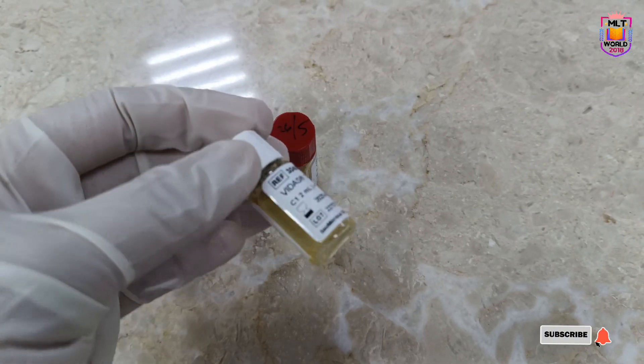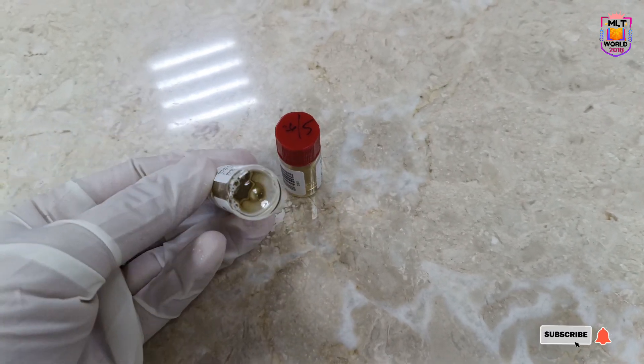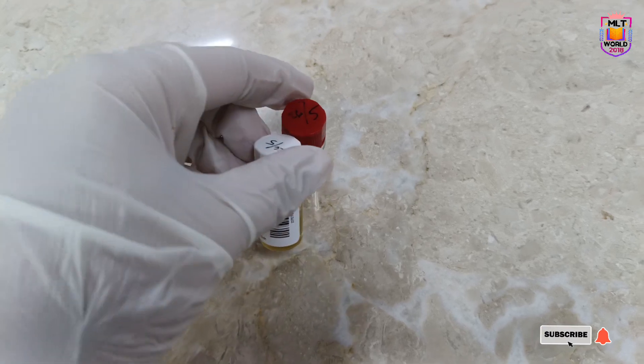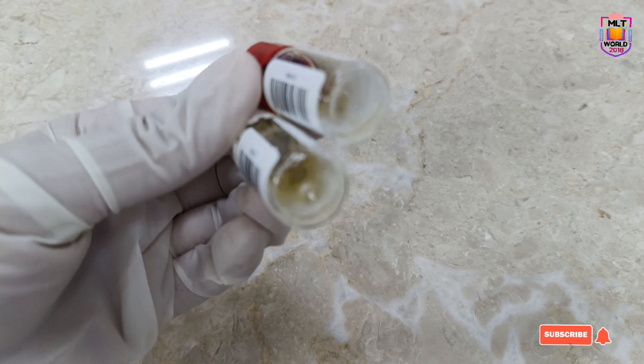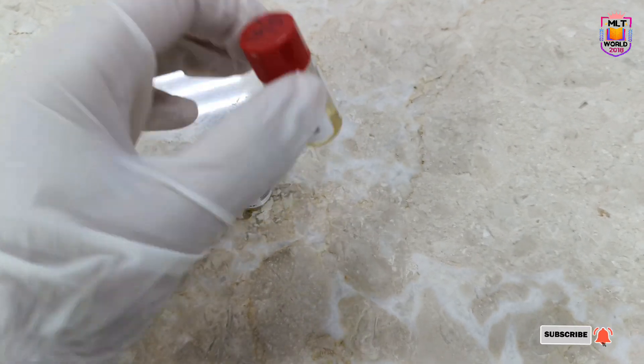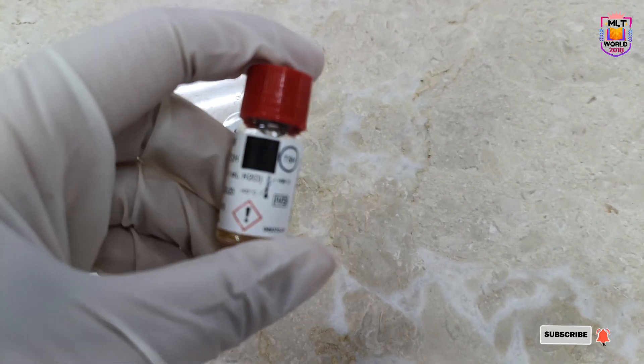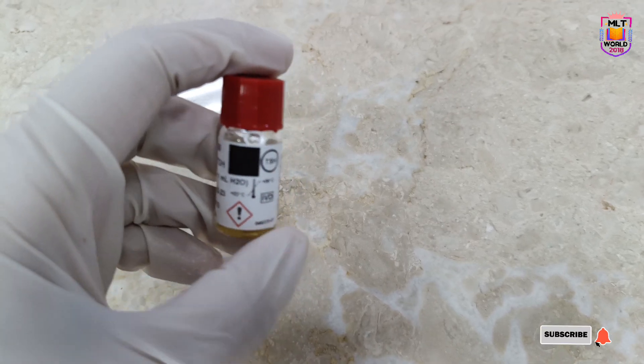An important thing: once you dilute your control or calibrator, after running calibration or control, keep your control and calibrator in the freezer at minus 20 degrees centigrade.